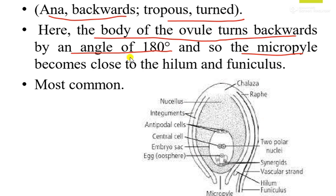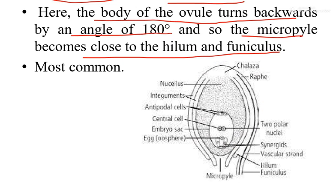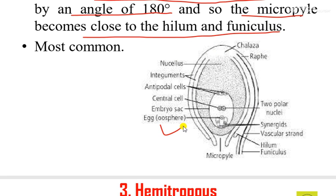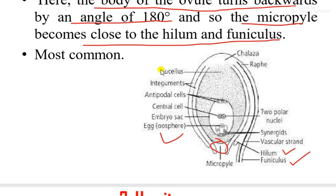In the anatropous ovule, the micropyle becomes close to the hilum and funiculus. As you can see in this diagram, the ovule is inverted in such a way that the micropyle comes near to the hilum and funiculus part. This is the most common type of ovule found in angiosperms — around more than 80 percent of angiosperms contain this type of ovule.